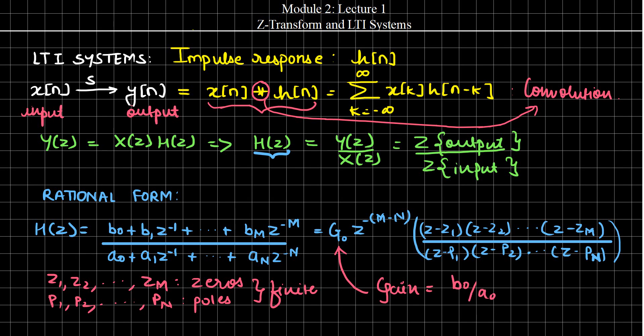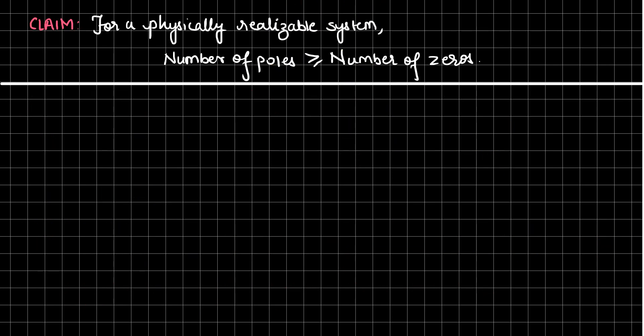Keeping all these things in mind, let us make a very interesting claim: for a physically realizable system, the number of poles is greater than or equal to the number of zeros — excluding poles and zeros at Z equal to infinity. When I say physically realizable systems, I am talking specifically about causal systems. Let us try to prove this claim using some examples.